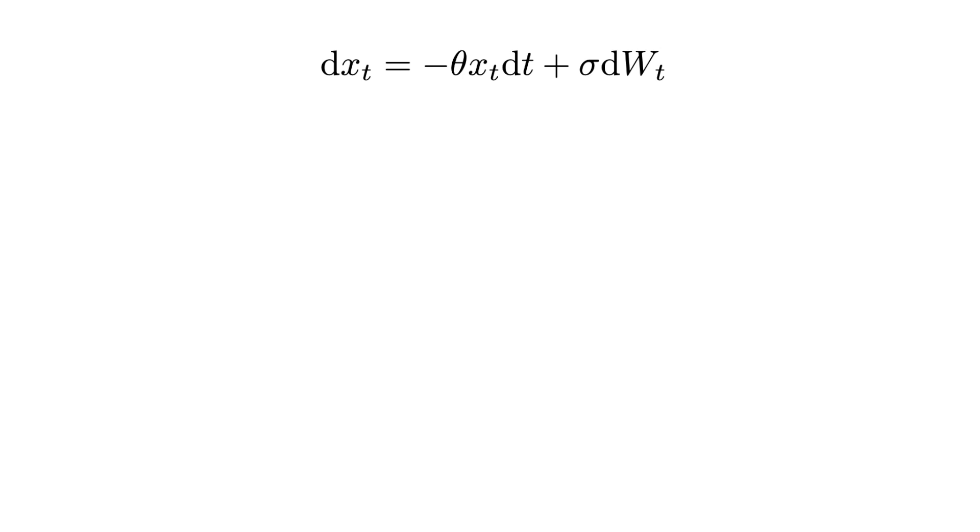In contrast to the second term, the first term in the Ornstein-Uhlenbeck equation is deterministic. It can be thought of as a restoring force that tends to bring x back to its mean value. For simplicity, this mean value is set to zero in our current discussion. In the absence of the stochastic second term, x would revert back to zero from any initial condition.